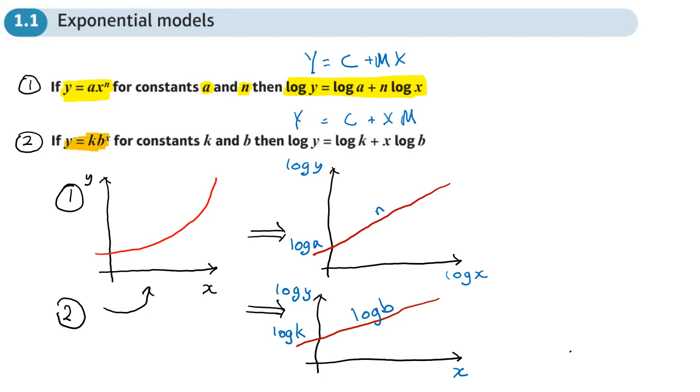Here is our second type of model. Again if we do logs to both sides, simplify we end up with that. And the two constants k and b are the two constants we need to find.